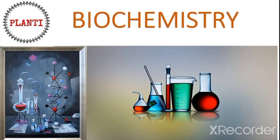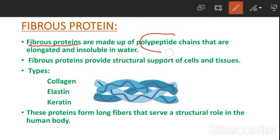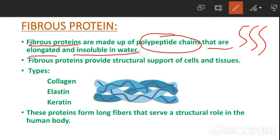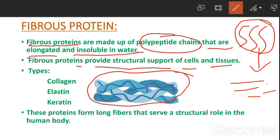Hi friend, welcome to planetary.com. Today I am going to demonstrate the fibrous protein collagen in biochemistry. Fibrous proteins are made up of polypeptide chains that are elongated and insoluble in water. The fibrous proteins provide structural support to cells and tissues.